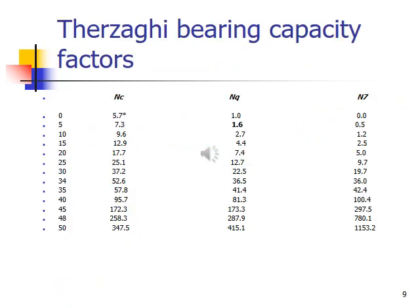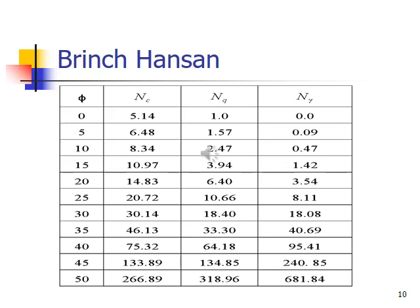Terzaghi bearing capacity factors are given: Nc, Nq, and Ngamma. Here it is the phi value. If phi is 0, the Nc value, Nq, and Ngamma will be given. Phi is 5, phi is 10 degrees, phi is 15 degrees, 20 degrees, like that. If phi is 13 degrees, in between these things we can interpolate in linear proportion. Linear proportionality is used and the things are interpreted. Brinch Hansen also given the Nc, Nq, and Ngamma values. Naturally, we follow Brinch Hansen, which is more appropriate and good.